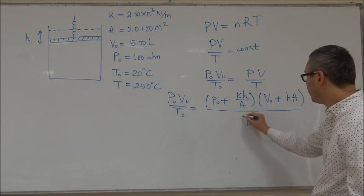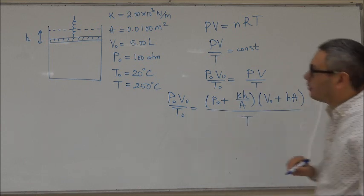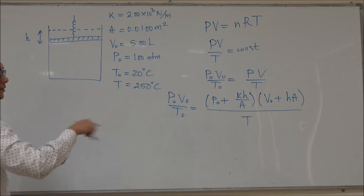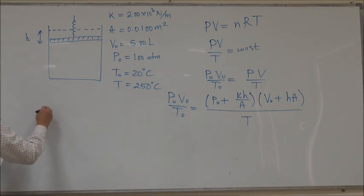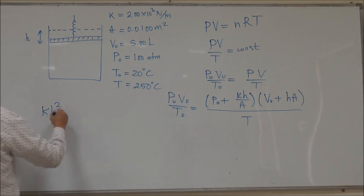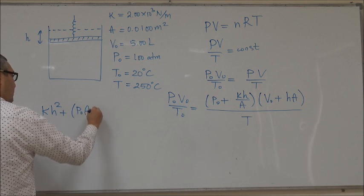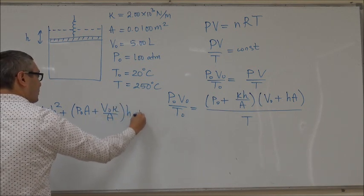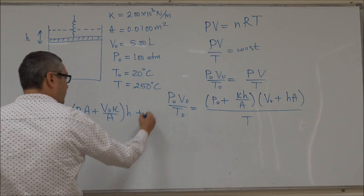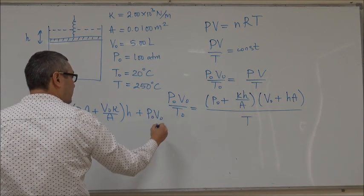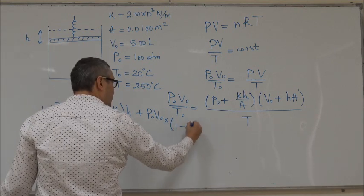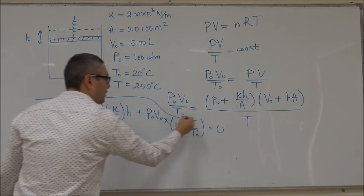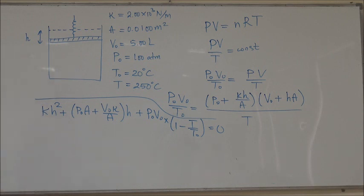If you do the algebra, this is what you get: KH² plus (P₀A + V₀K/A)H plus P₀V₀(1 - T/T₀) equals 0. So we get this quadratic equation with respect to H.